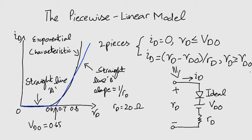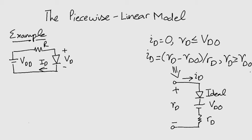Let's look at an example to better understand this model. Determine the current Id and the diode voltage Vd for the circuit on your screen with Vdd equals 5 volts, R equals 1 kilohm, Vd0 equals 0.65 volts, and Rd equals 20 ohms.